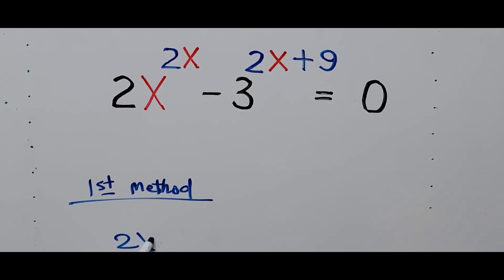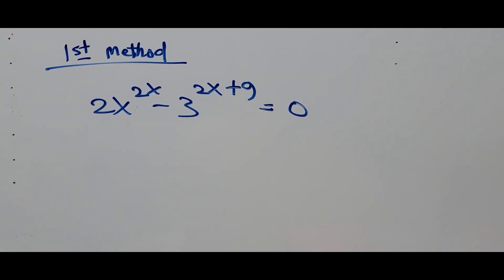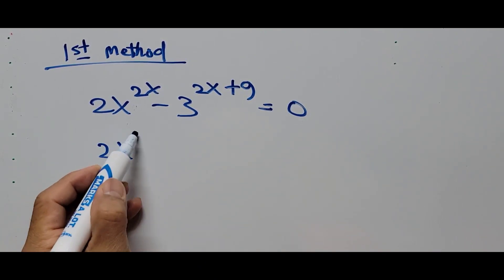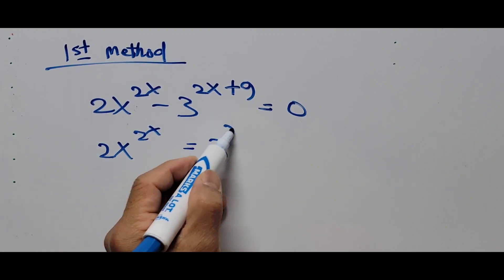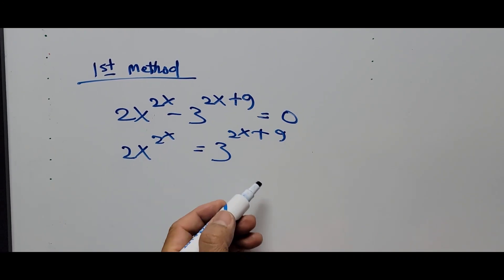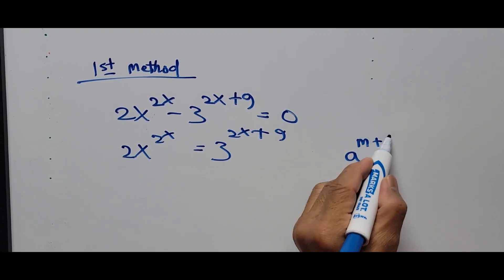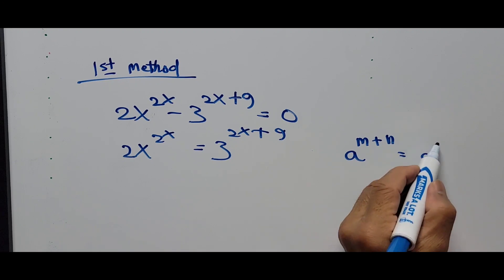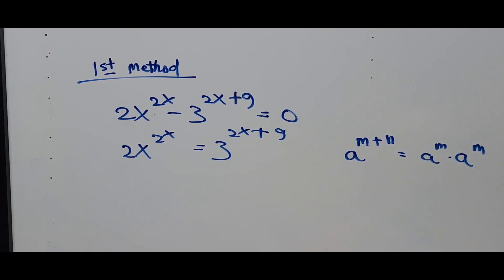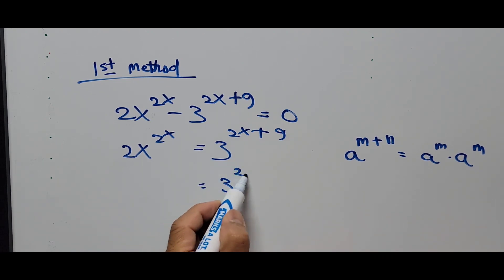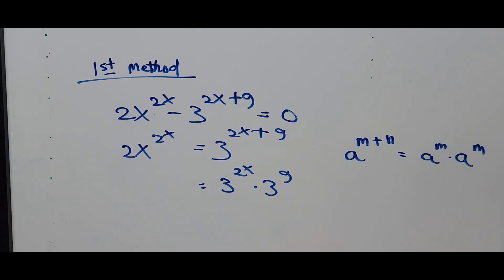For the first method, using the exponent rules, write the equation again: 2x raised to the 2x minus 3 raised to the 2x plus 9 equals 0. I would like to transfer the second term to the right side of the equation, giving us 2x raised to the 2x equals 3 raised to the 2x plus 9. On the right side we'll use the exponent rule a raised to m plus n equals a raised to m times a raised to n, so this becomes 3 raised to 2x times 3 raised to 9.